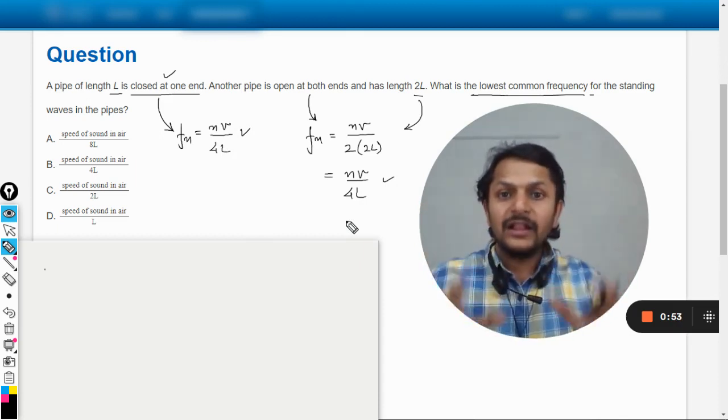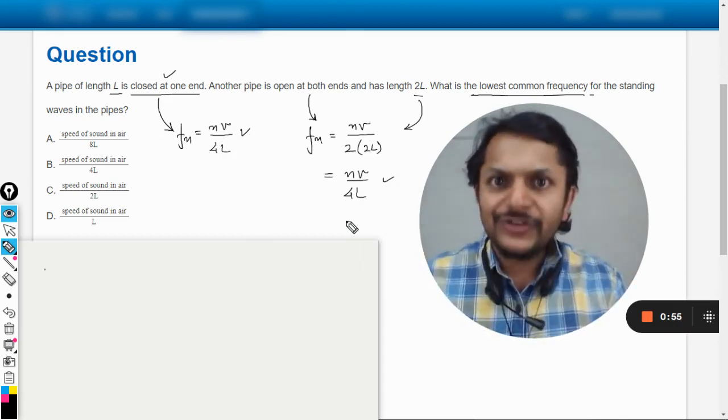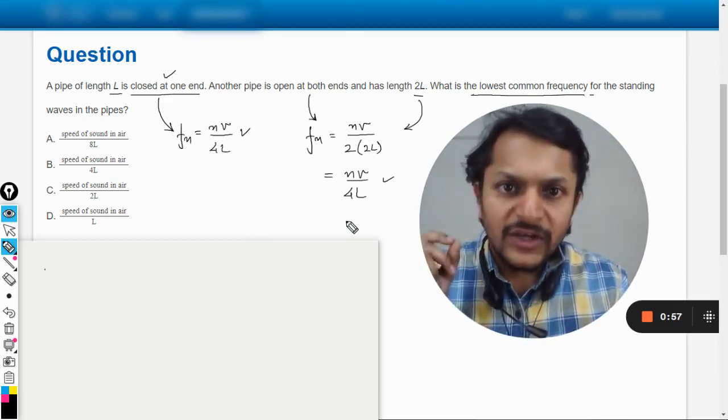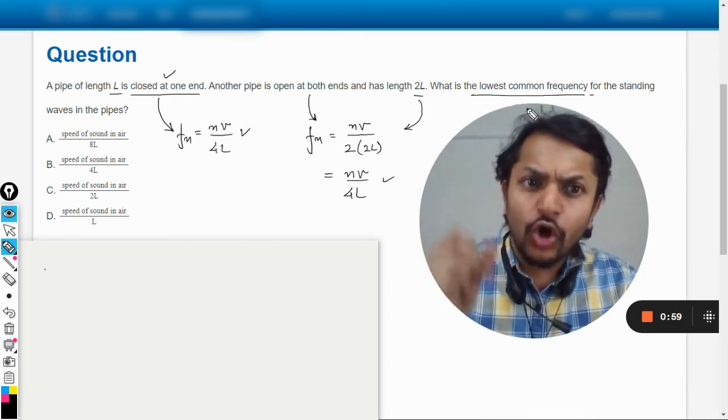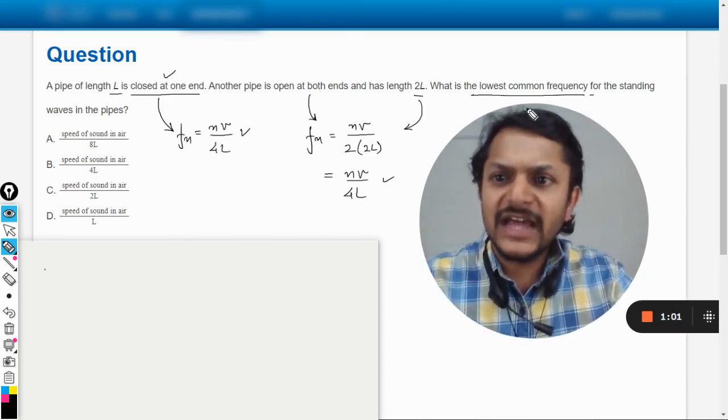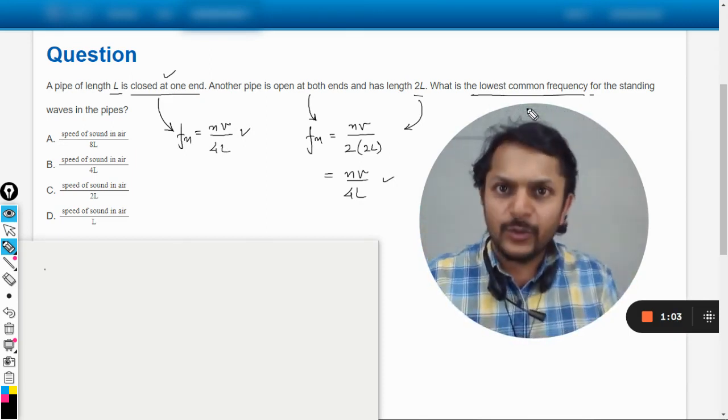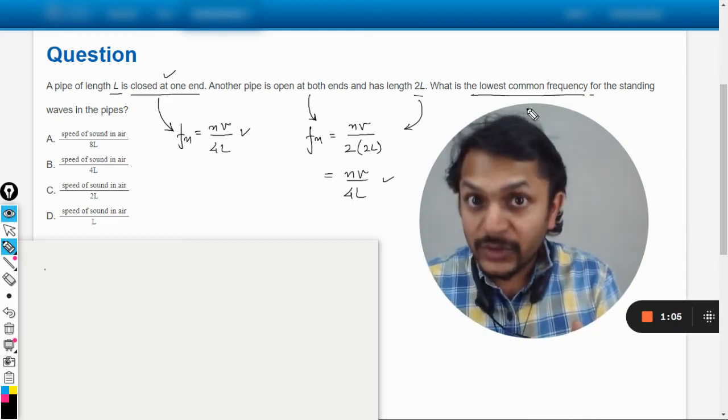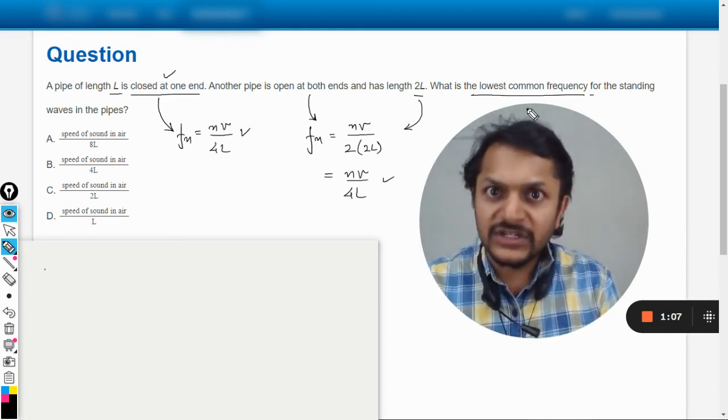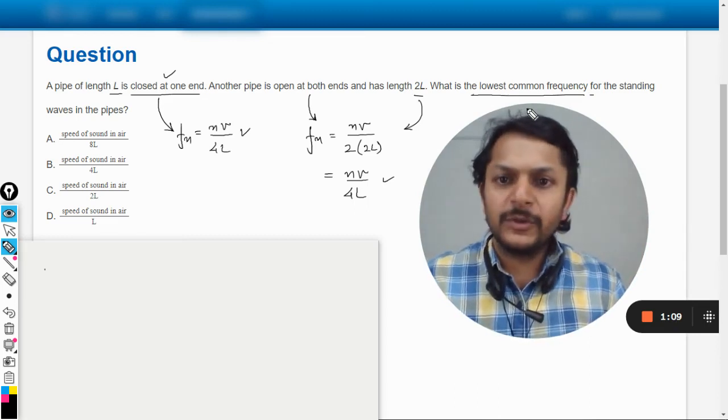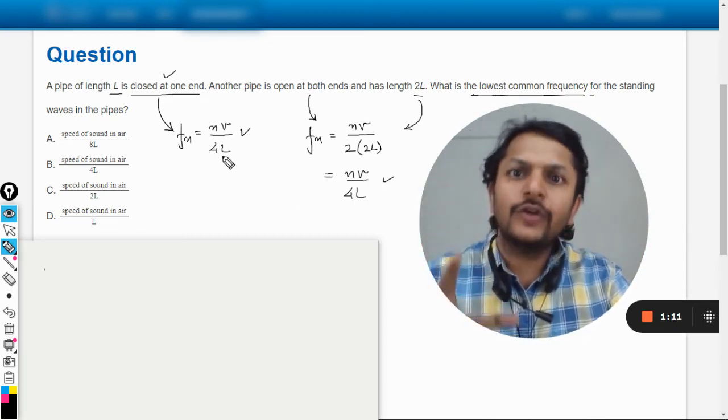The question is: what is the lowest common frequency for the standing waves? They're not talking about the lowest frequency; they're talking about the common frequency. What do we mean by common frequency? This is a set of frequencies. For example, in this case we only have odd harmonics, and we can have n equals